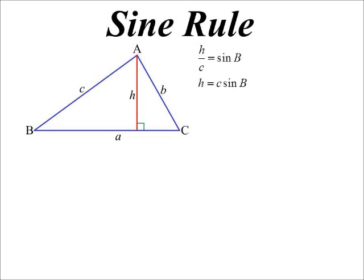And then we can say, well, we know that H over C in the left-hand side triangle would be the sine of B, so H is C sine B.